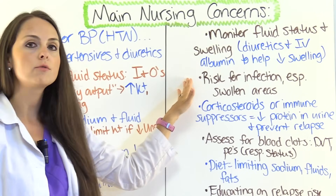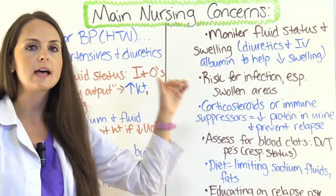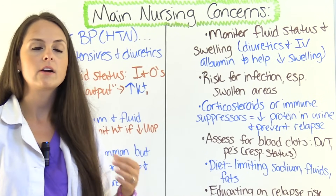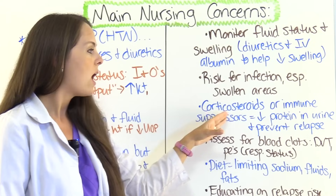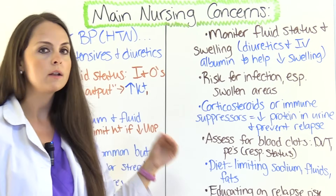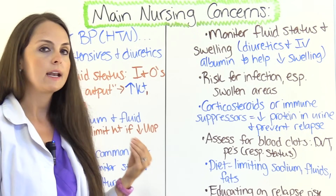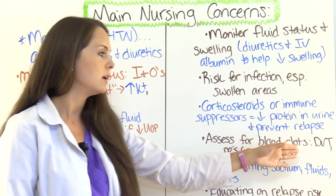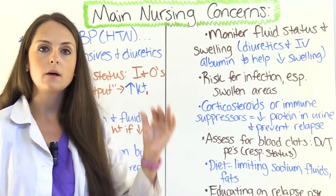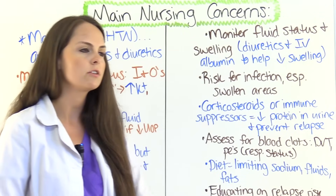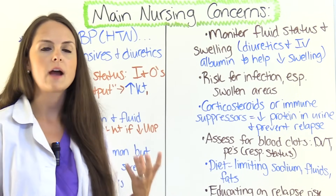Monitor these patients for infection because they're at risk, more so than with acute glomerulonephritis. Watch edematous areas especially, as they're at risk for skin breakdown due to significantly more swelling. One treatment is corticosteroids or an immunosuppressant, which will help decrease the amount of protein lost in the urine and help prevent relapse, since relapse can happen with this condition. Also assess for blood clots because they're losing immunoglobulins that help with infection and proteins that help decrease clot formation — check for redness, swelling, or pain in extremities, which could represent a DVT or pulmonary embolism.